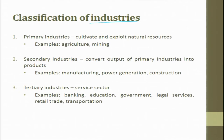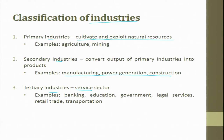When we talk about industry, it is divided into primary, secondary, and tertiary industries. Primary industries involve cultivation or exploitation of natural resources. Secondary industries are manufacturing, power generation, and construction — where the output of the primary is converted into a useful product. Tertiary industries are predominantly focused on the service sector, including banking, education, government, legal services, retail trades, and transportation.